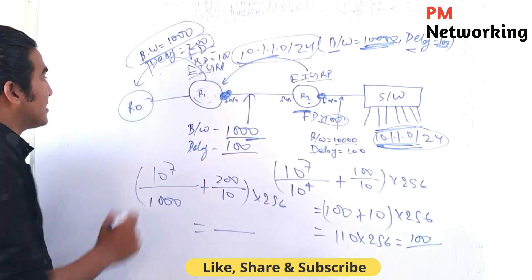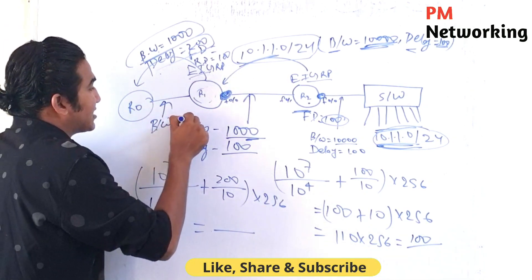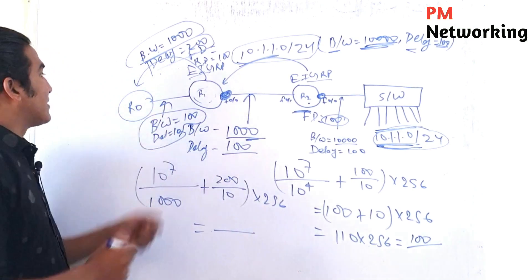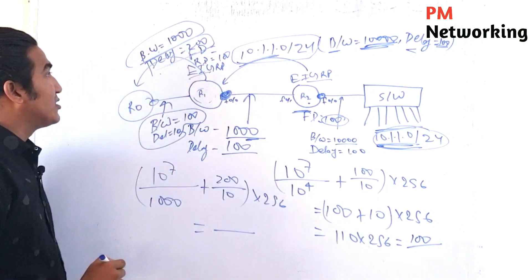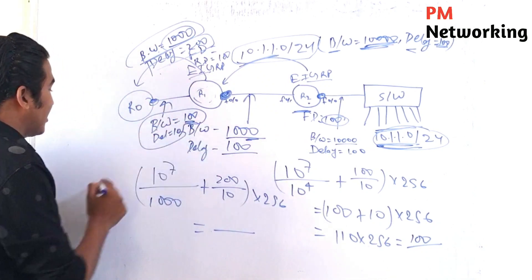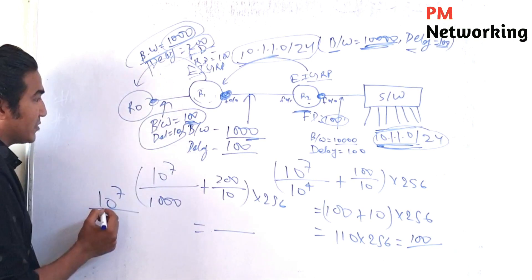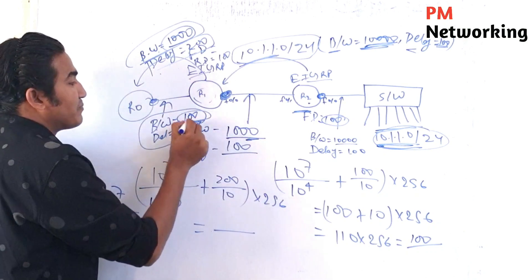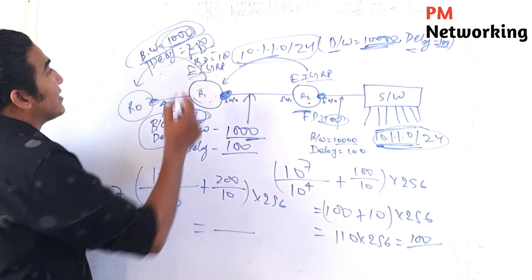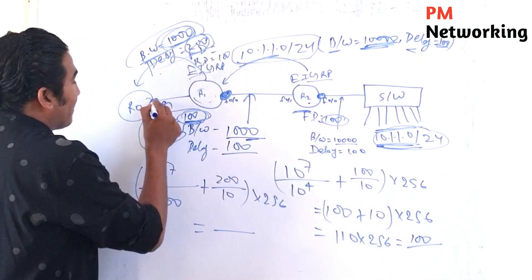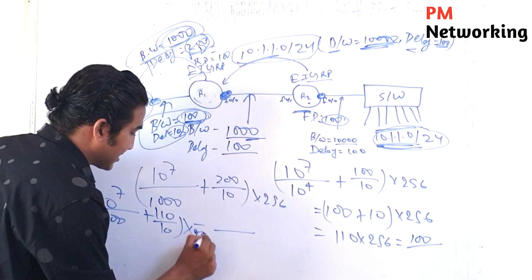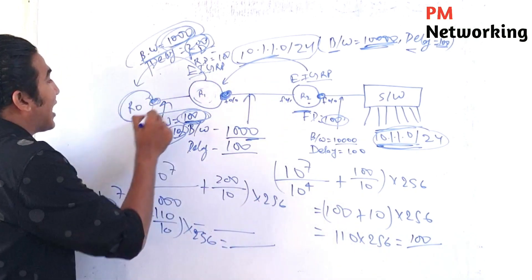R0 receives the update where bandwidth is 1,000 and total delay is 200. R0's receiving interface bandwidth is 100. R0 compares its interface bandwidth (100) with the bandwidth in the update (1,000) — the least is 100. So R0 calculates: 10 to the power 7 divided by 100, plus total delay of (200 + 10) = 210 divided by 10, multiplied by 256. Whatever value you get becomes the FD for R0 to reach this network.